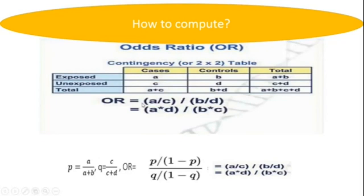The odds ratio is calculated as (a/c) divided by (b/d), which simplifies to (a × d) divided by (b × c). The probability that disease occurs in the exposed group is a divided by (a + b). The probability that disease occurs in the unexposed group is c divided by (c + d), where c + d is the total number of unexposed persons. The odds ratio is thus the ratio of probabilities of belonging to the different groups.